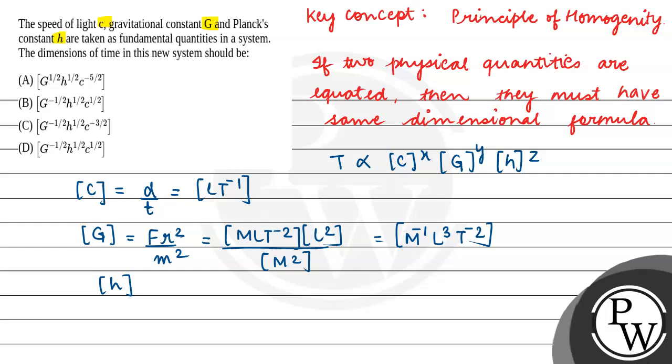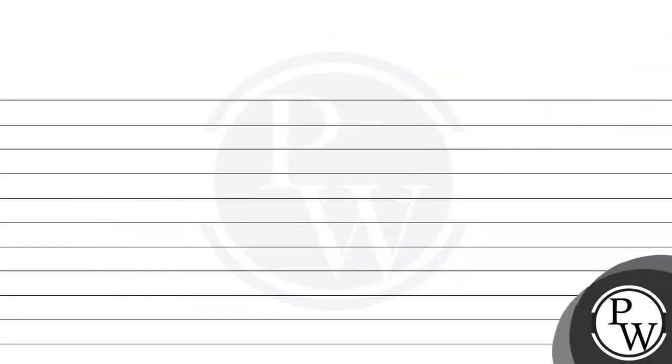Next, h. H equals E by frequency. That equals M L squared T minus 2, and F is T minus 1. So h's dimension will be M L squared T minus 1. Now we have the dimensions of speed of light, gravitational constant, and Planck's constant. Now we'll put them in the equation according to the question with their values. Time is directly proportional to c to the power x, G to the power y, and h to the power z.